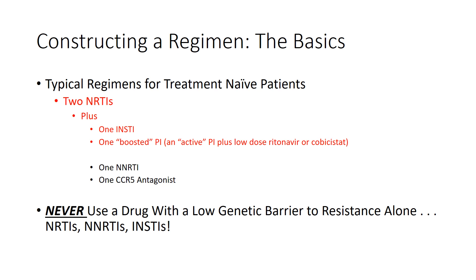I never want somebody to use a drug with a low genetic barrier to resistance by itself. A low genetic barrier means that missing even a couple of doses can quickly lead to resistance. Current regimens are built from high genetic barrier drugs, which means that even if a patient misses a dose or two, there is less chance they will develop resistance — because life happens.